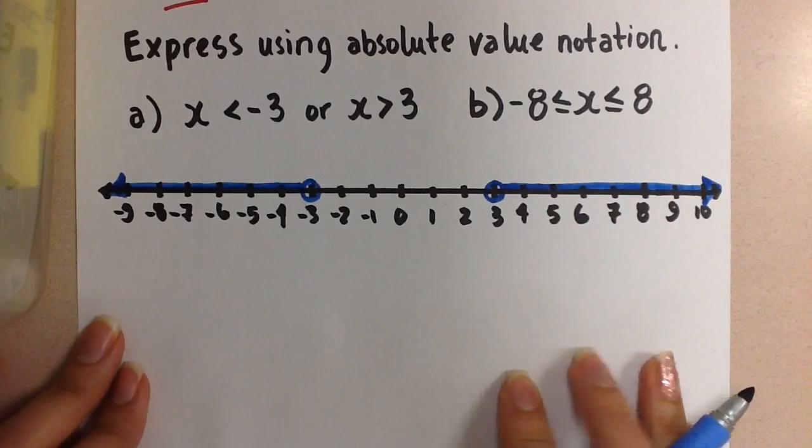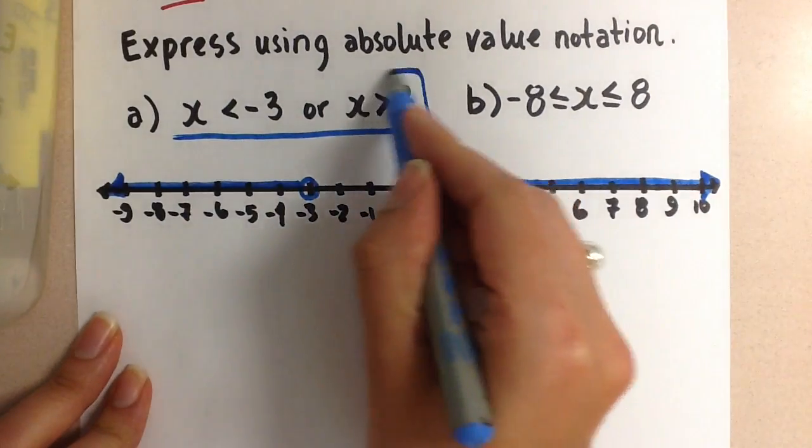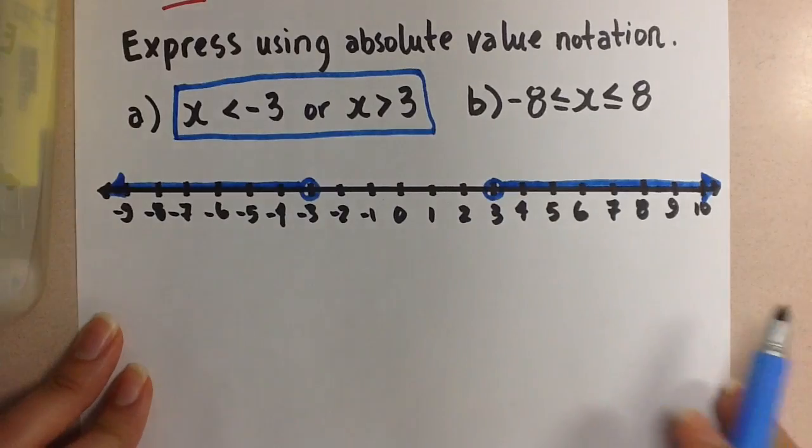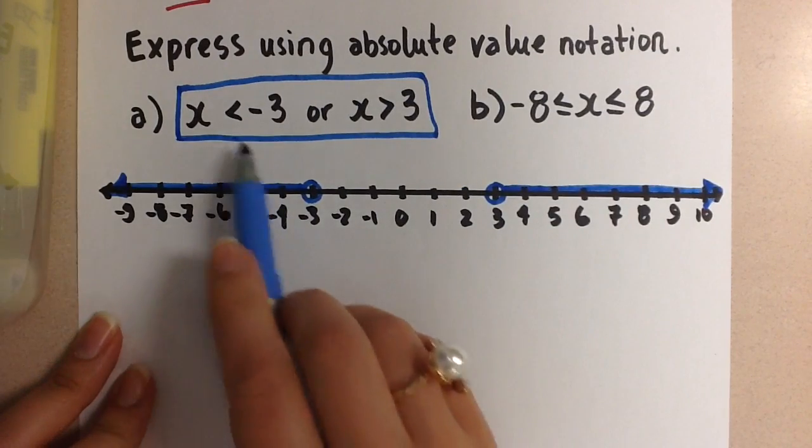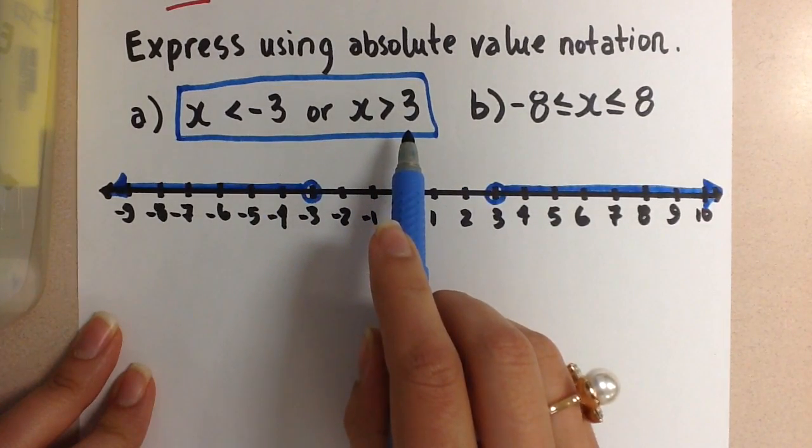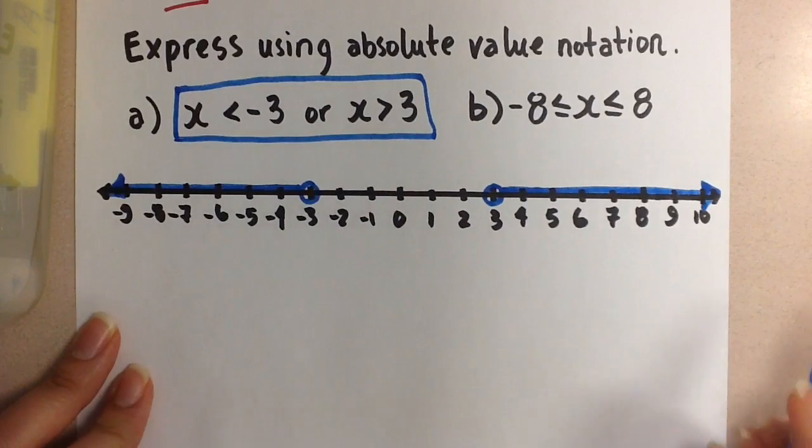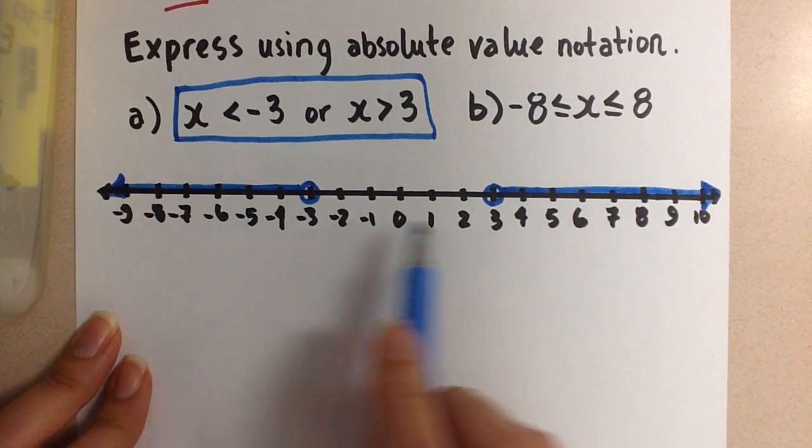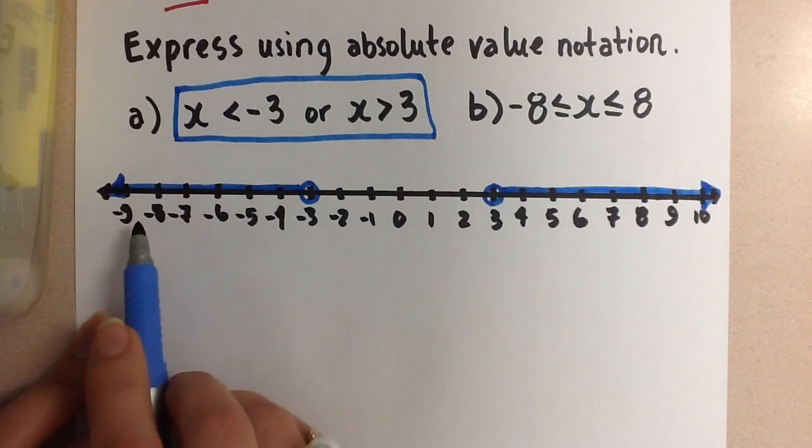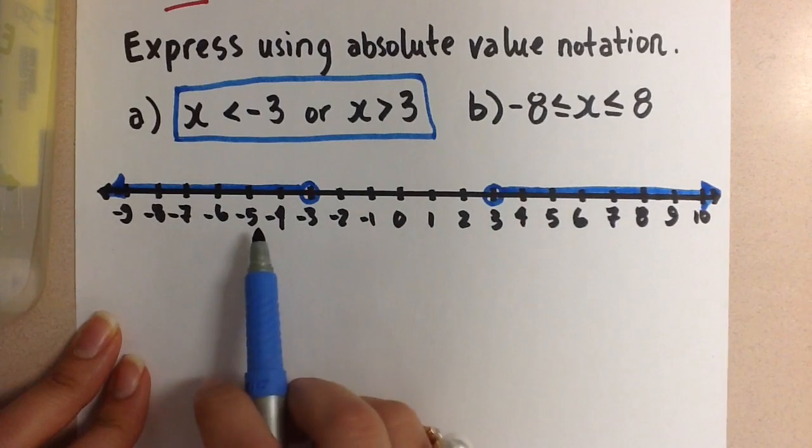This is for these inequalities here. If we were to change this notation that we're used to up until now into absolute value notation, then we have to consider the values of these two sets of numbers without the signs on them.